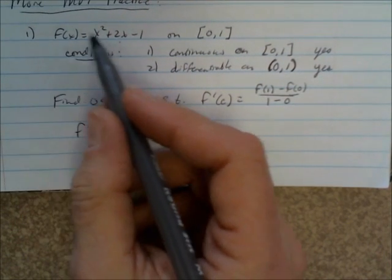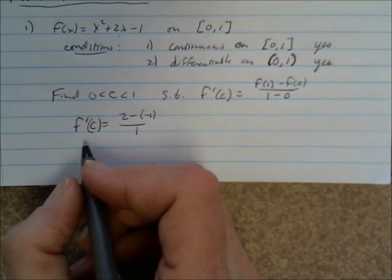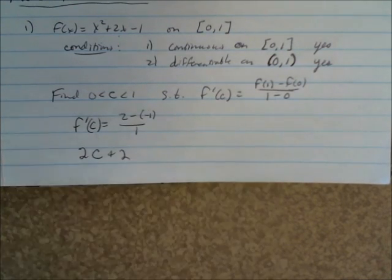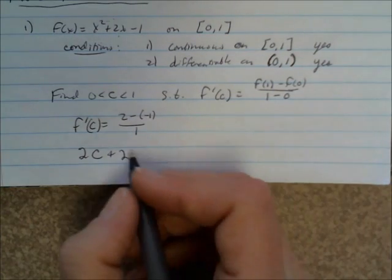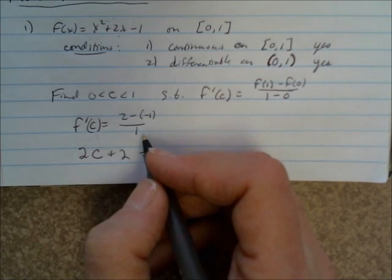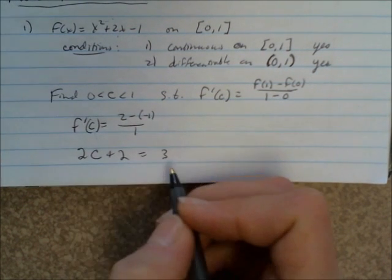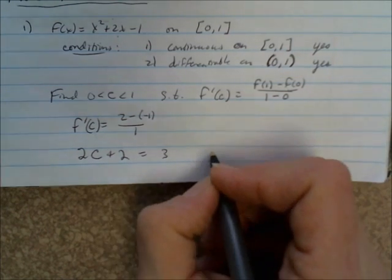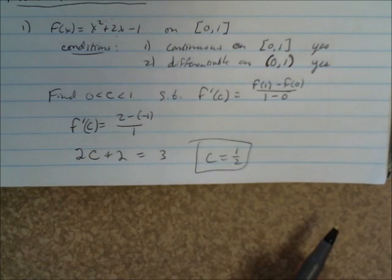f'(x) is 2x plus 2. So f'(c) is 2c plus 2. Instead of doing f(x), let's just plug in c for x when you take the derivative of this original function. So 2c plus 2 equals 3. Subtracting 2 from each side, you get 2c equals 1, so c equals 1/2. That's your value of c, and that's in the interval between 0 and 1.